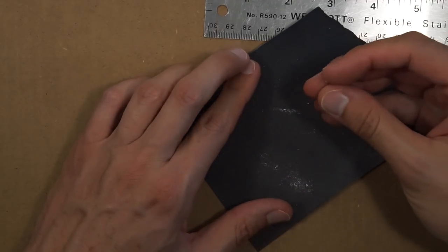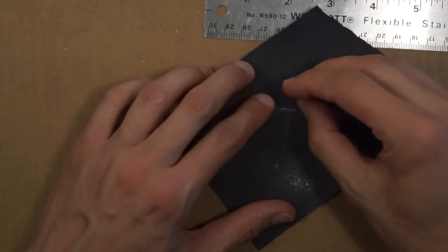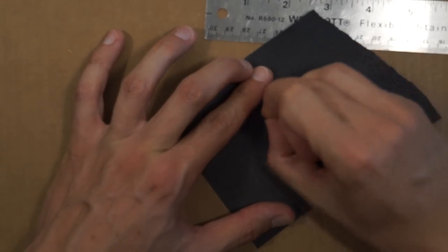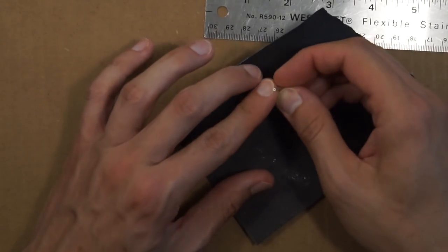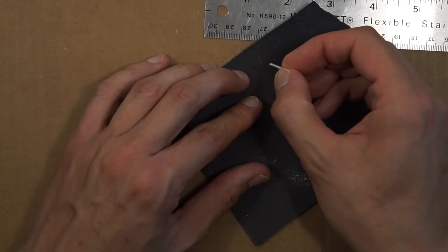It's very important that you get the ends of the aluminum tubing smooth and squared off, so we're going to sand them. And make sure you check and get a really level squared off end.